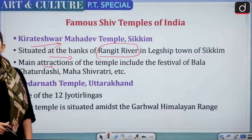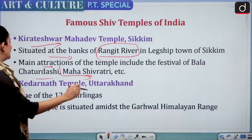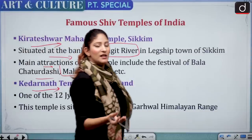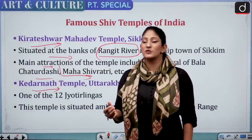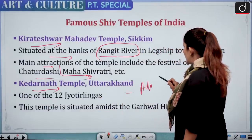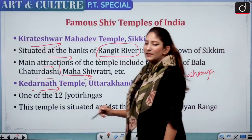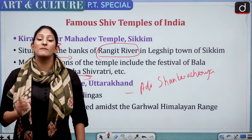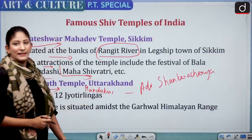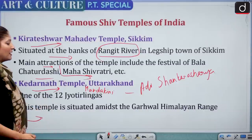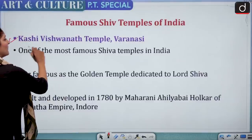Kedarnath Temple is one of the 12 Jyotirlingas proposed by Adi Shankaracharya. It is situated on the banks of the Mandakini River, amidst the Garhwal Himalayan range — important for prelims. Kashi Vishwanath Temple of Varanasi is dedicated to Lord Shiva, known as the Lord of the World — Vishwanath. It is one of the most famous Shiva temples in India.